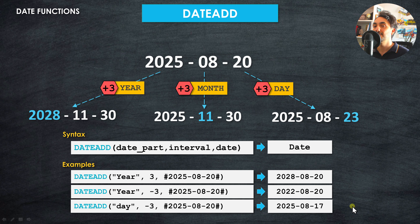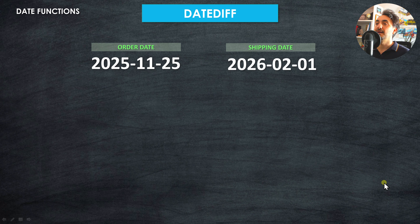DATEADD is a very important function in Tableau. You can use it both to add and to subtract intervals. A common use case is comparing this year with the next year — add one year to your field and you get two fields: the current year and the next year. We'll see that in upcoming examples.